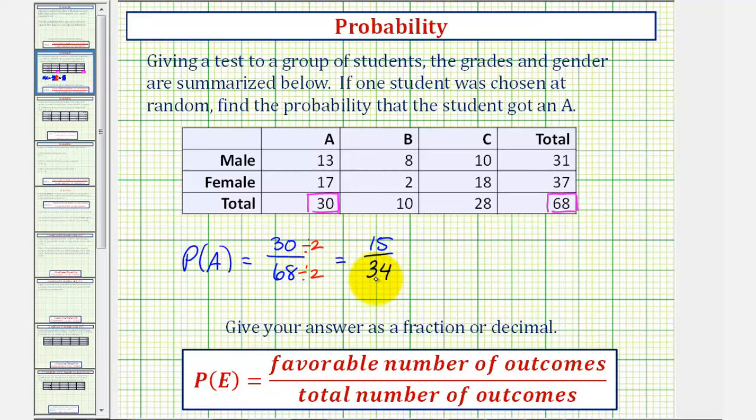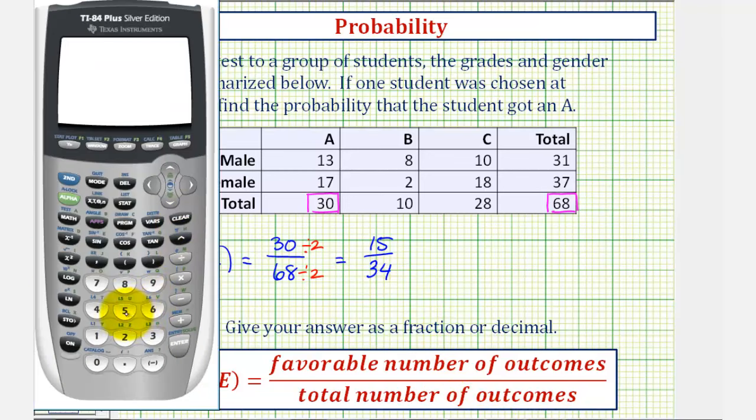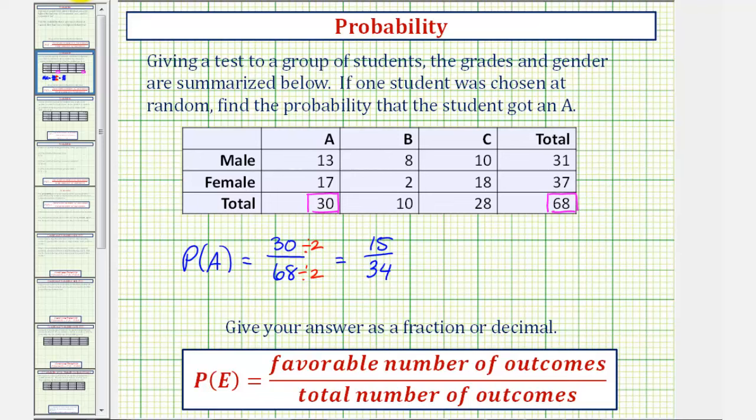But let's also give the probability as a decimal, and even though it doesn't ask, as a percentage. So to convert the fraction to a decimal, we'll divide. So 15 divided by 34. Let's round this to four decimal places. So this would be approximately 0.4412. Notice how the seven indicates to round up. So the decimal value is going to be an approximation, 0.4412.